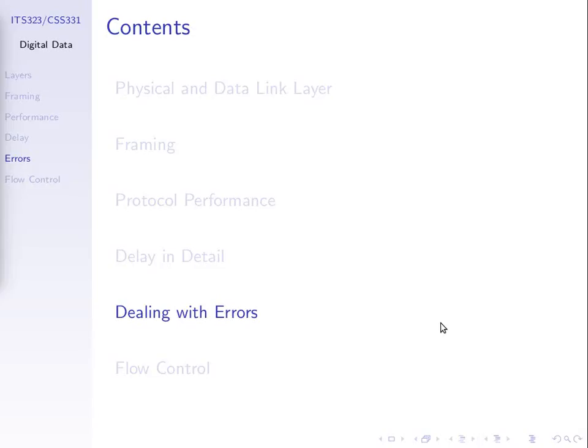As we've said in the topic on data transmission, impairments in our communication system mean that what we receive is not the same as what's transmitted. We have noise and attenuation, and one of the results of those impairments is that the data received is different from what was transmitted. With digital data, we measure that as bit errors. If I transmit the bits 1100 and receive 1110, we have a one-bit error. That's a problem — that's ineffective data communications.